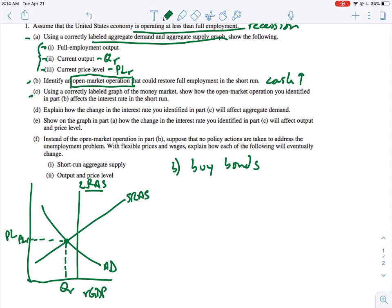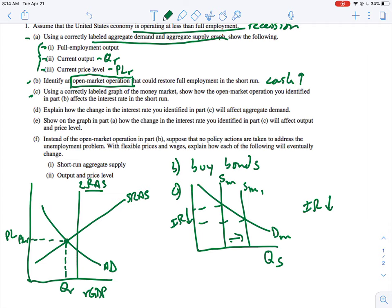So correctly labeled graph of the money market, show how buying bonds affects the interest rate in the short run. So now let's draw the money market. So new graph, and we have Q money here and interest rate here. We know that the supply of money is vertical where the Fed sets it, and we know that demand for money is downsloping. That's just the regular money market graph. When we buy bonds and we increase the money supply, SM1, we're going to have this movement which means that our interest rate is going to fall. So IR will fall.